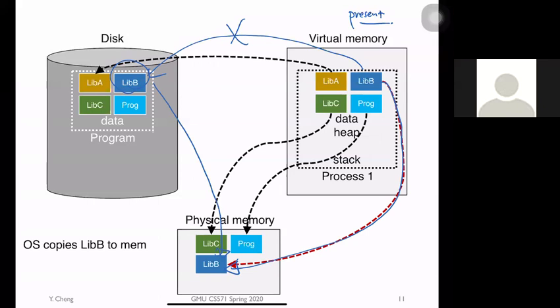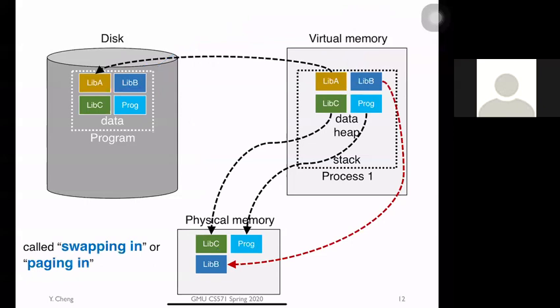Previously it had a pointer pointing to somewhere on disk. Now it completely changes and updates this information, establishing a new pointer that points to the physical memory. This is how virtual memory serves as a bridge that connects users — connecting the disk space together with the physical memory. This whole copy process of copying library B from disk to memory is called swapping in or paging in.